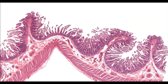Let's move on to take a look at simple columnar epithelium. Simple tells us that the epithelium is formed by a single layer of cells. The term columnar means that the cells will be tall and rectangular in shape. The slide we see on the screen comes from the ileum, the last region of the small intestine.